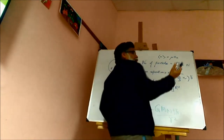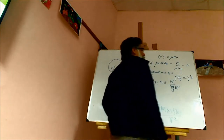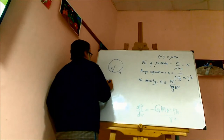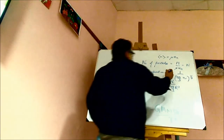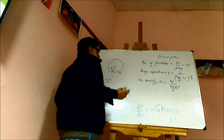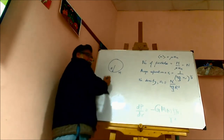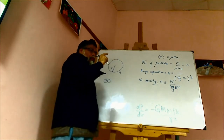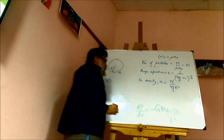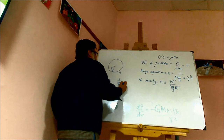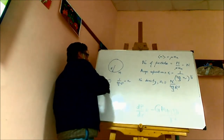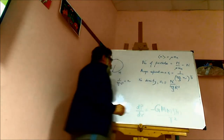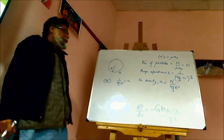The reason the average separation is n^(-1/3) is this: imagine one particle occupying a volume R0³. Then 1 particle divided by (4π/3)R0³ must equal the number density. So R0³ = 3/(4π) times 1/n, and therefore R0 = (3/4π)^(1/3) * n^(-1/3). That is the average separation.